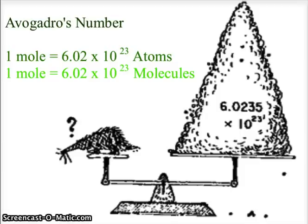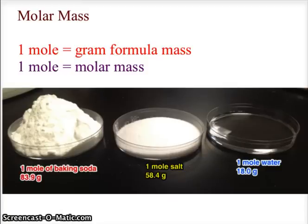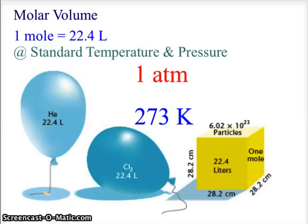But we don't only talk about the mole as being Avogadro's number of atoms and molecules. We also talk about the mole being the molar mass. One mole is equal to the gram formula mass or the molar mass. So if I have a mole of baking soda, I'm going to have 83.9 grams. If I find one mole of salt, I'm going to have 58.4 grams. And if I have one mole of water, I'm going to have 18.0 grams. The molar mass, the gram formula mass, is always equal to one mole.